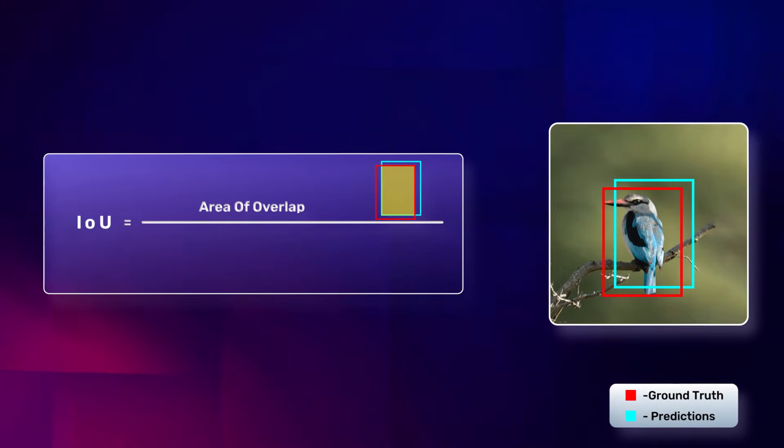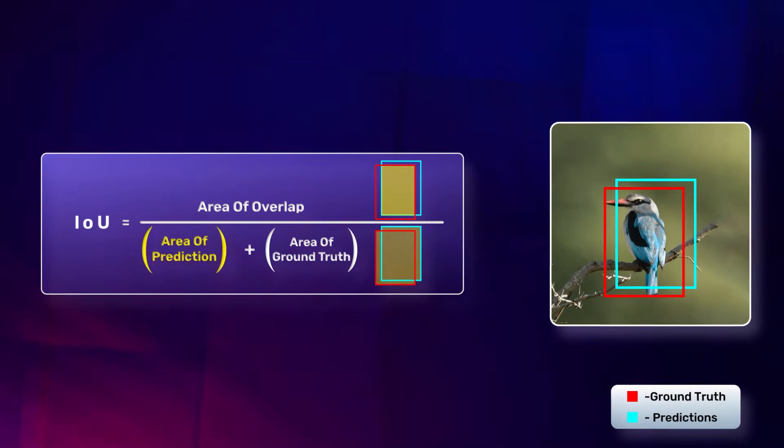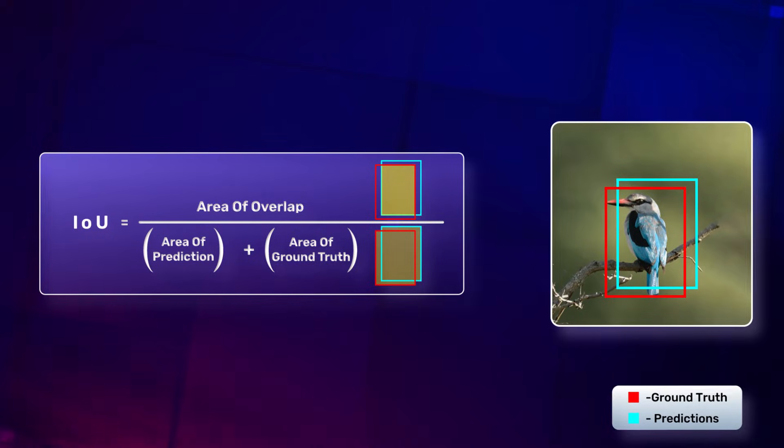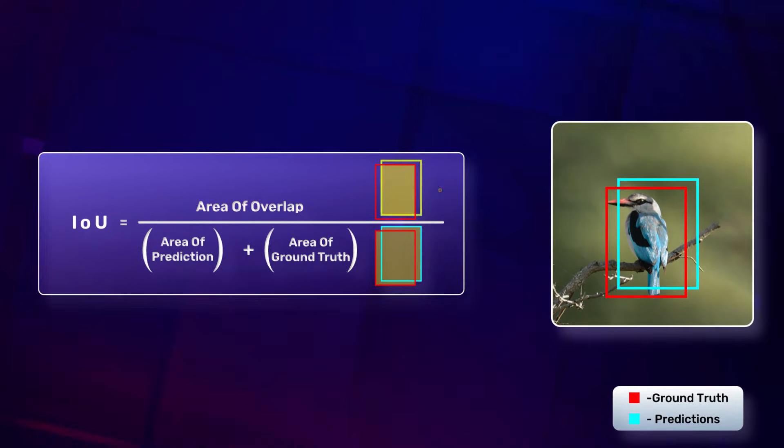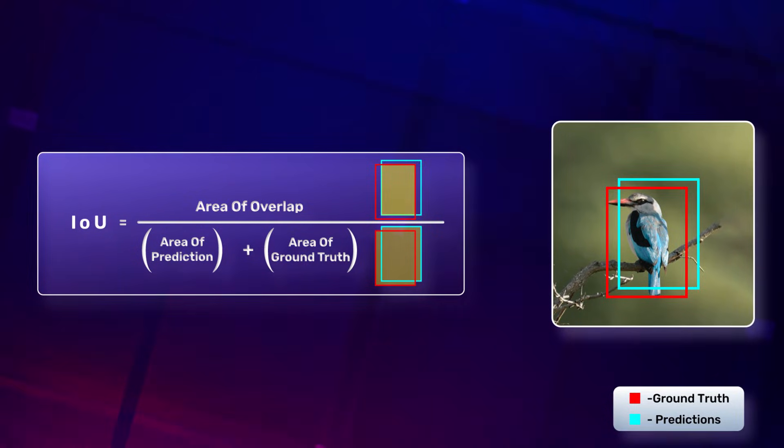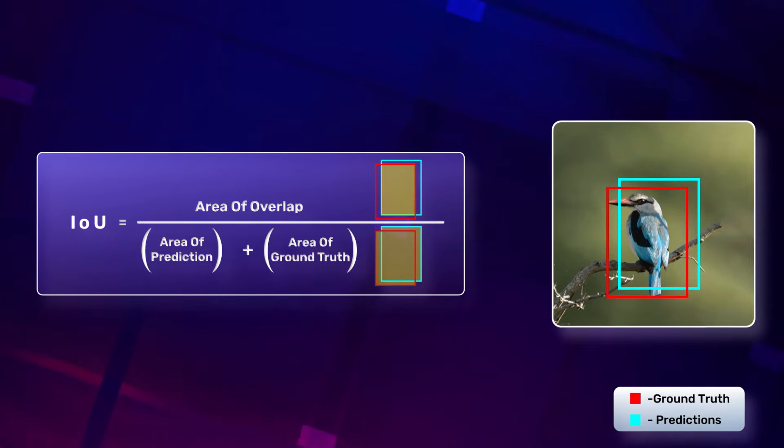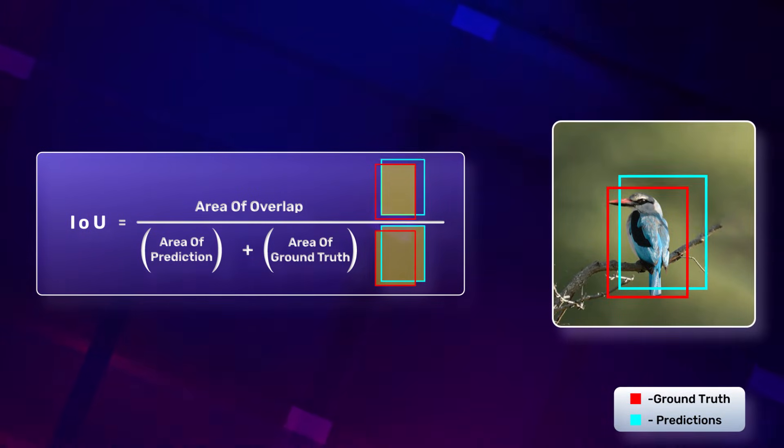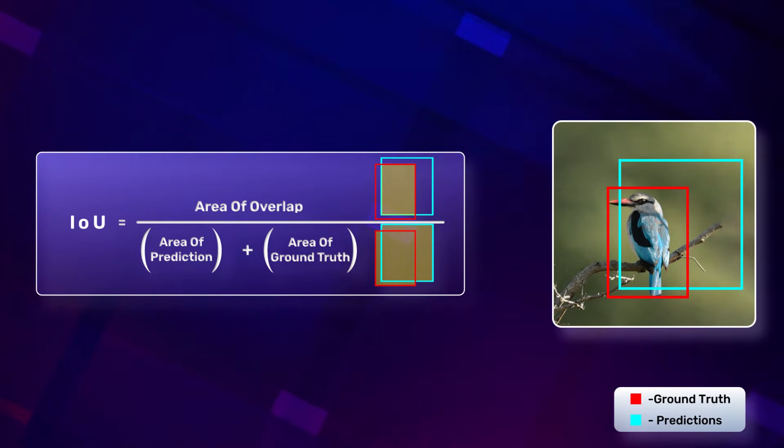It is the ratio of the overlap area to the combined area of prediction and ground truth. The numerator will be lesser as the prediction fails to predict the area inside the ground truth. If the area of predicted box is higher, then the denominator will also be higher.